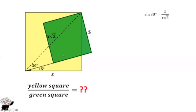So sin 30° equals the opposite z over the hypotenuse x√2.